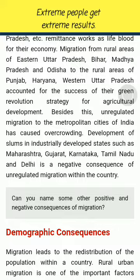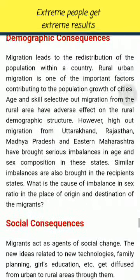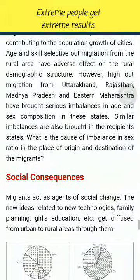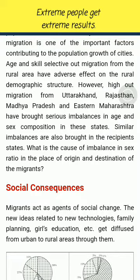Demographic Consequences. Migration leads to the redistribution of population within a country. Rural-urban migration is one of the important factors contributing to the population growth of cities. Age and skill selective out-migration from rural areas have adverse effects on the rural demographic structure. High out-migration from Uttarakhand, Rajasthan, Madhya Pradesh and eastern Maharashtra have brought serious imbalances in age and sex composition in these states, and similar imbalances are also brought in the recipient states.